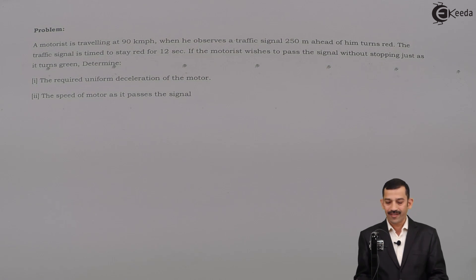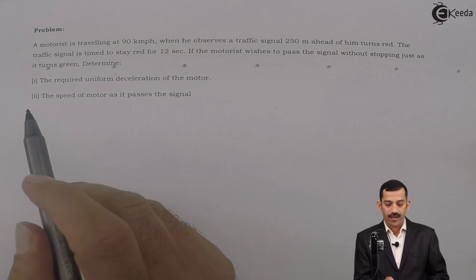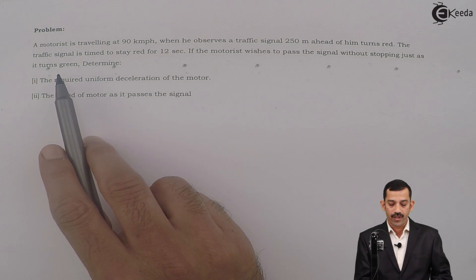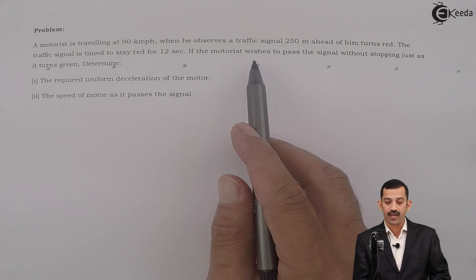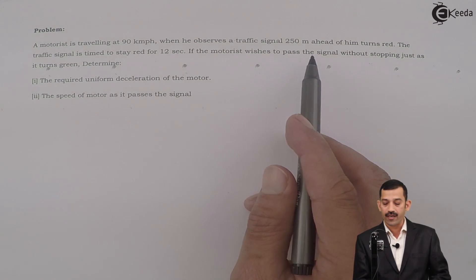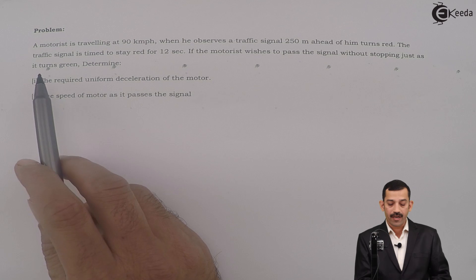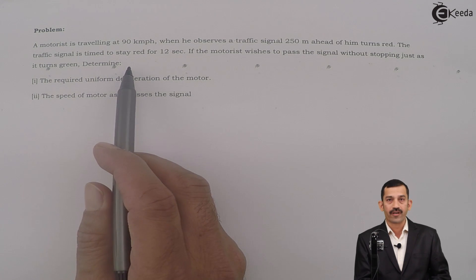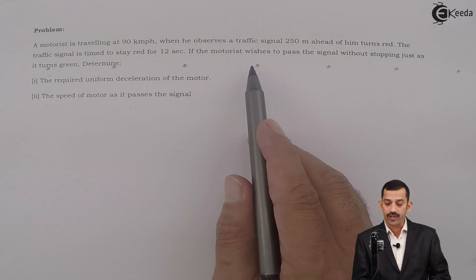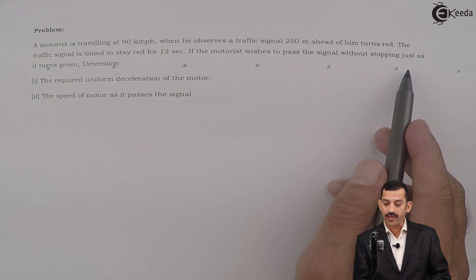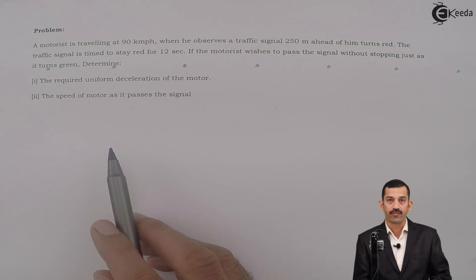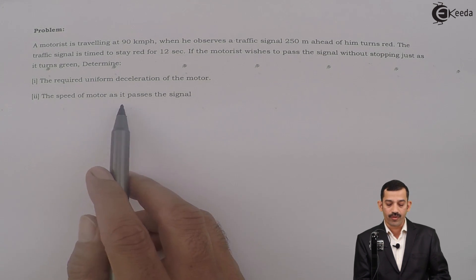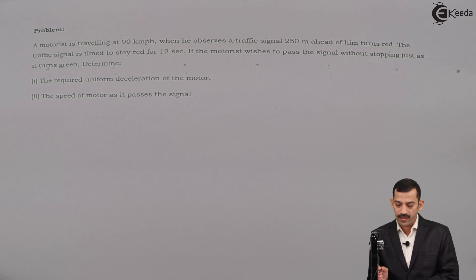Hi friends, we will solve this problem: A motorist is travelling at 90 km per hour when he observes a traffic signal 250 meters ahead of him turn red. The traffic signal is timed to stay red for 12 seconds. If the motorist wishes to pass the signal without stopping, just as it turns green, determine: number one, the required uniform deceleration of the motor, and second, the speed of the motor as it passes the signal.